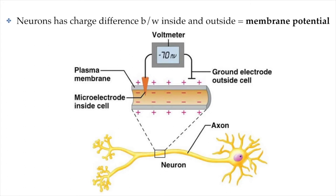If we were to take a voltmeter, which measures voltage or electric potential difference, and put one electrode outside the neuron and the other inside, we would detect a difference in membrane potential. The inside of a neuron is much more negative than the outside — exactly minus 70 millivolts of potential difference between the inside and outside of a neuron.